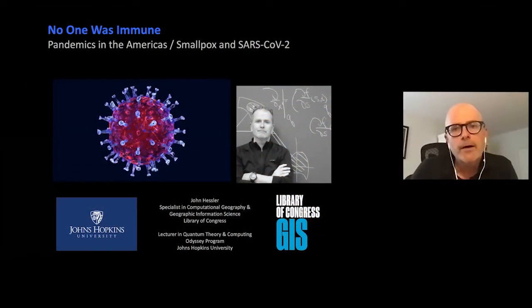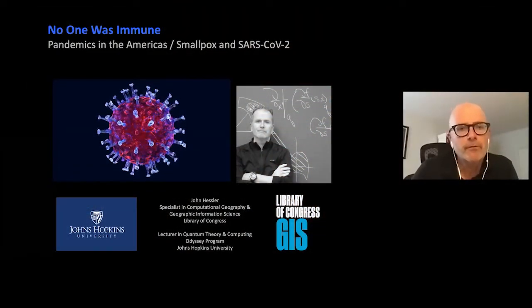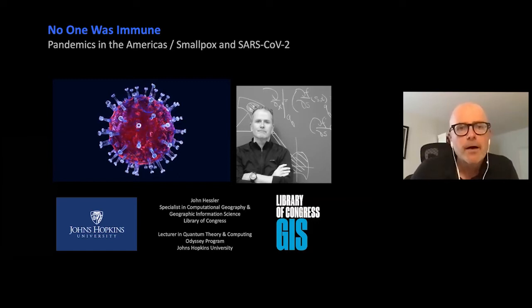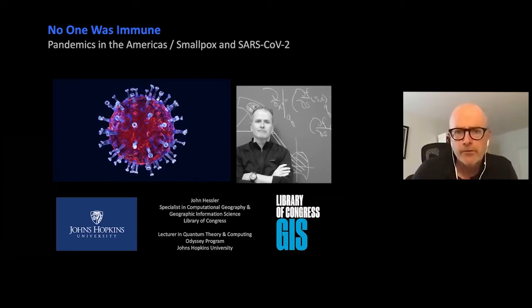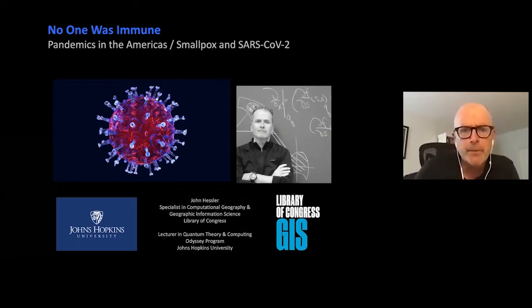Hey everyone, welcome to Hopkins at Home. My name is John Hessler and I'm a specialist in Computational Geography and Geographic Information Science at the Library of Congress and also a lecturer here at Johns Hopkins. Today we're going to take a little dive into some of the pandemics that have happened in the Americas. We're going to look at smallpox, SARS, COVID-2 — the thing that is sort of haunting our lives right now — and talk about some of the other things associated with both of these very different pandemics.